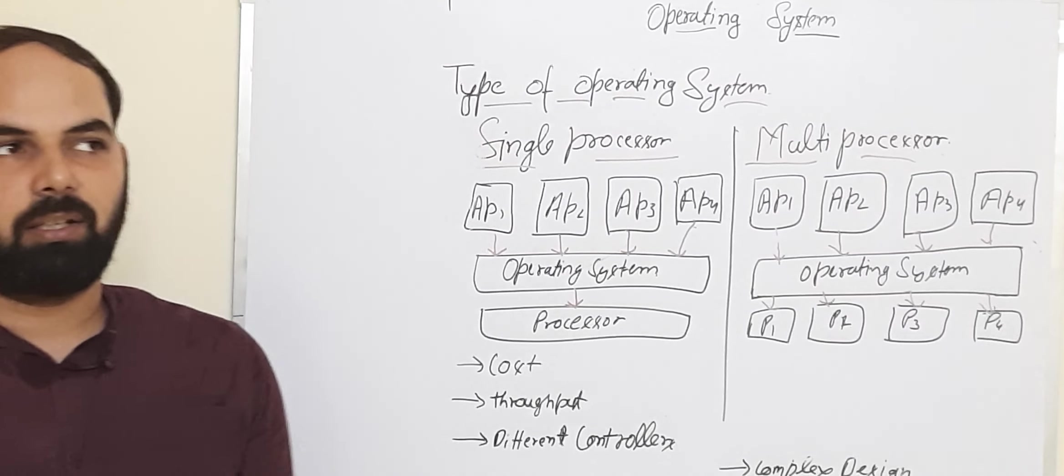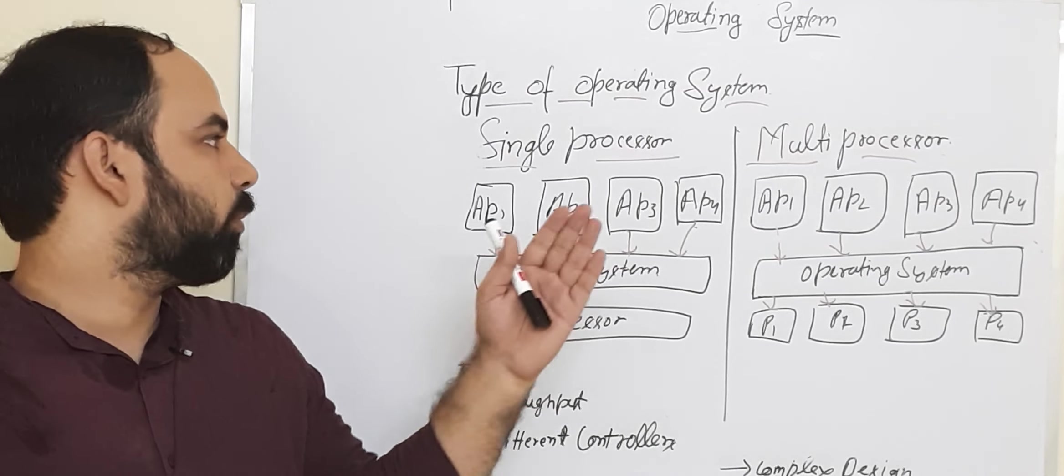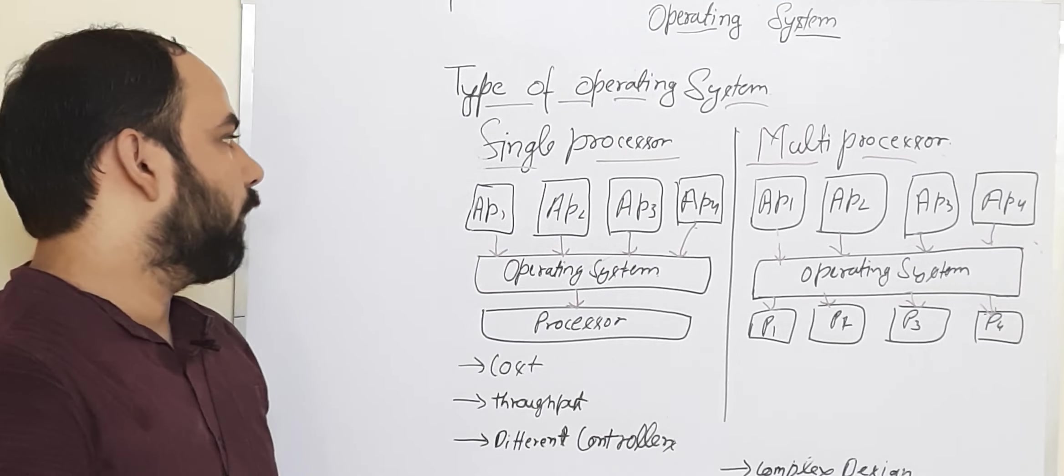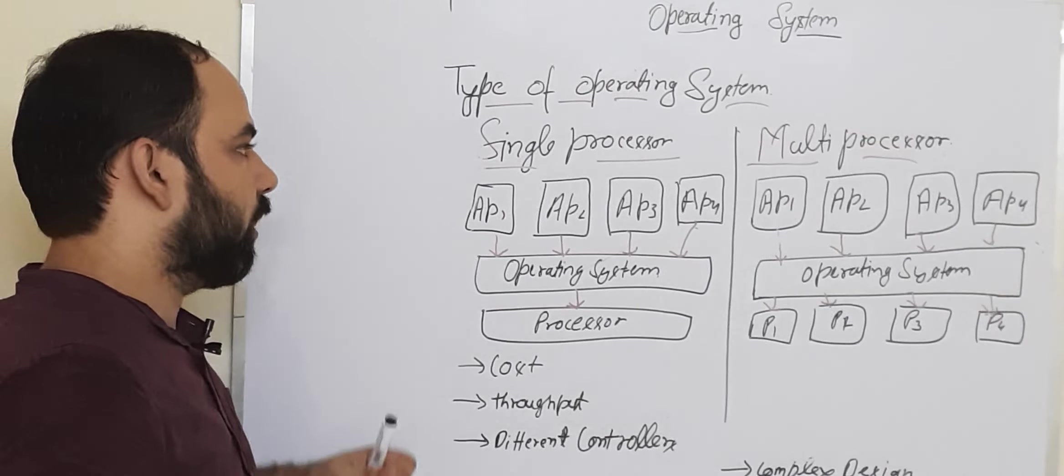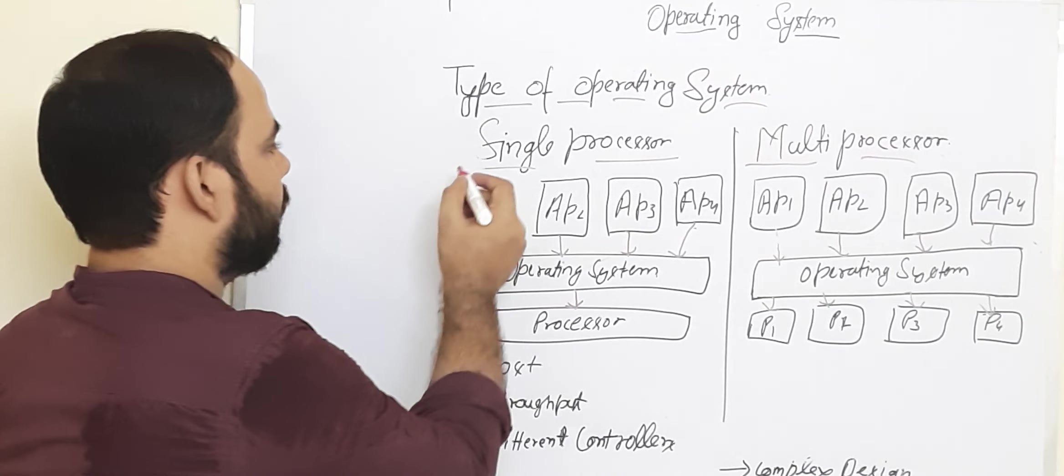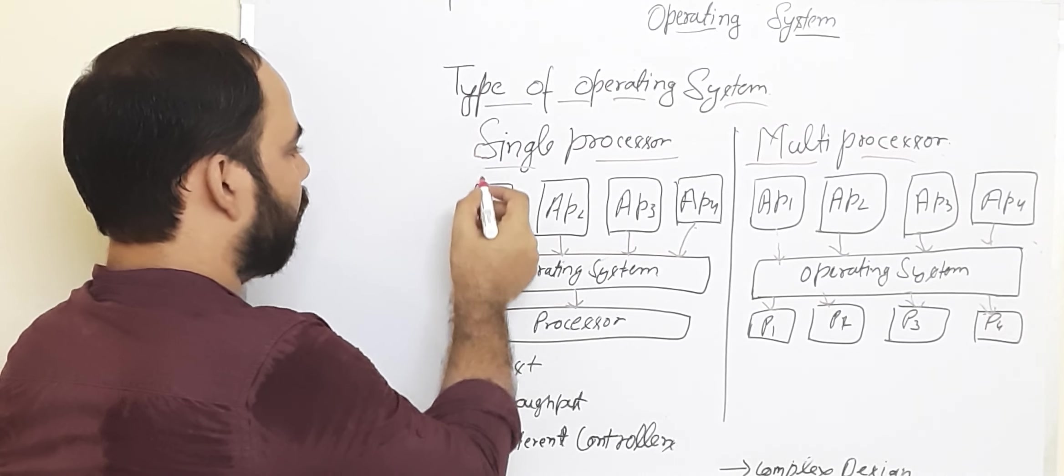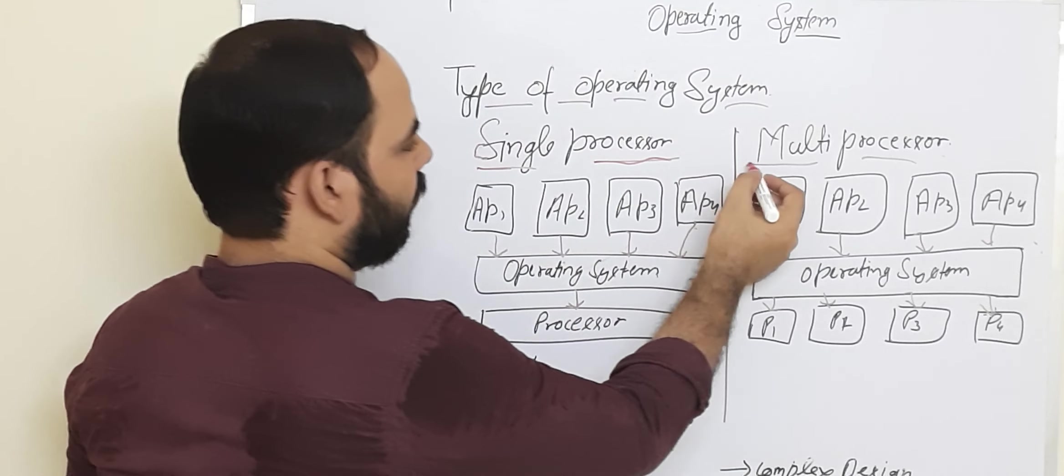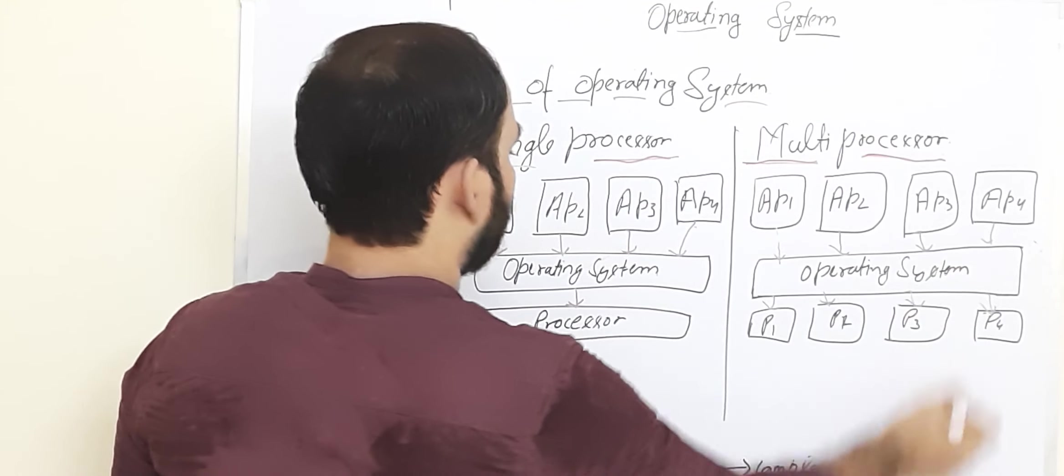Hello everyone, my name is Prashanth. Today we will discuss types of the operating system. In the type of operating system, we have two types: one is a single processor operating system and one is a multi-processor operating system.